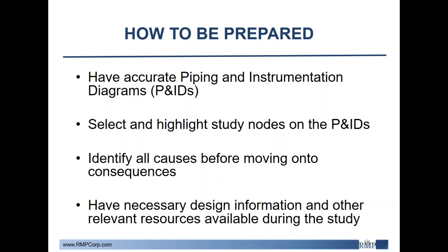Next is selecting and highlighting study nodes on the P&IDs, going along with the flow of the process as much as possible. Once everything is noted, the team can move on to identifying causes. It is best to address all causes throughout the node before moving on to consequences, safeguards, and risk ranking, because safeguards and consequences could appear in numerous places and you don't want the team to get sidetracked and miss causes. Finally, it is good to have additional design information available, such as set points of PSVs, alarms, shutdowns, and design parameters for equipment like maximum allowable working pressures.